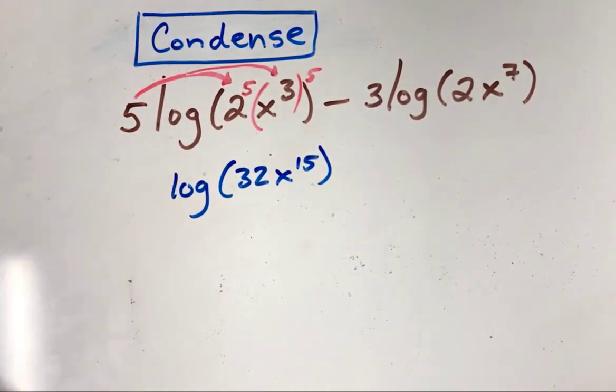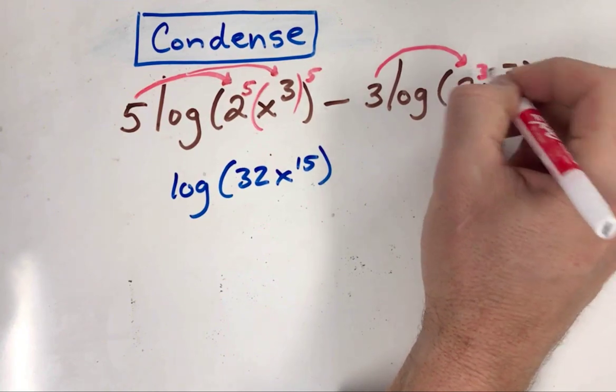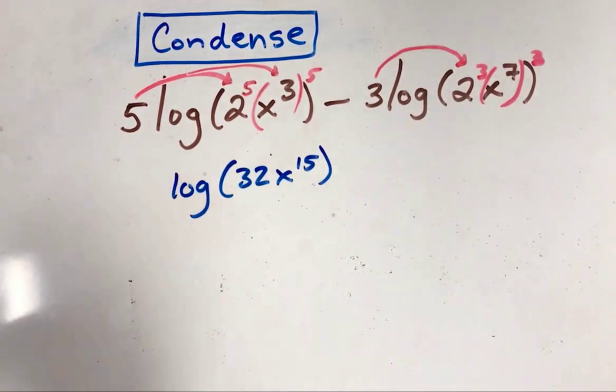Now we do the other log as well. There's a 3 there, so I bring that 3 in just like the previous one. That becomes 2 to the third power, and if you cube x to the seventh power, that becomes x to the twenty-one.